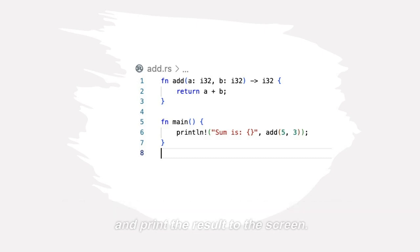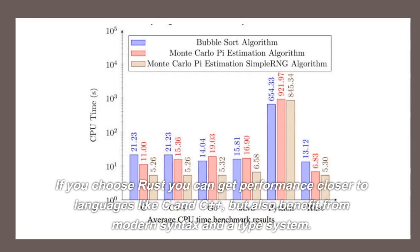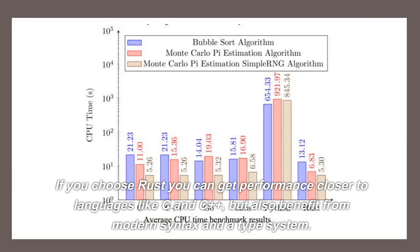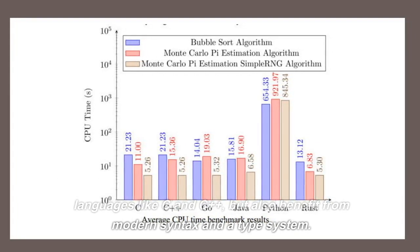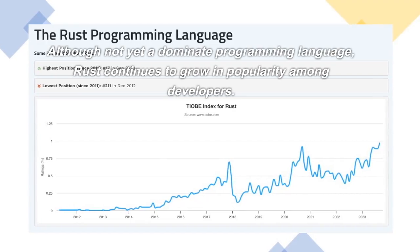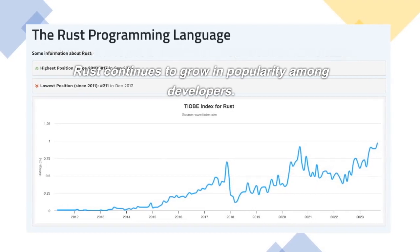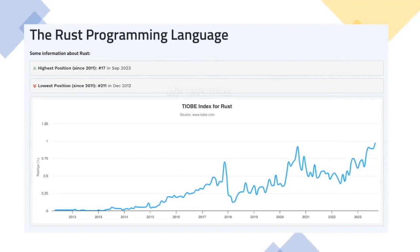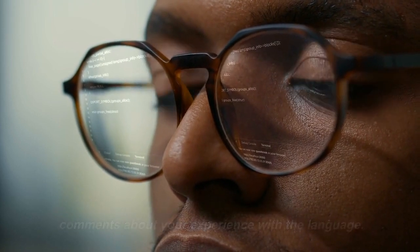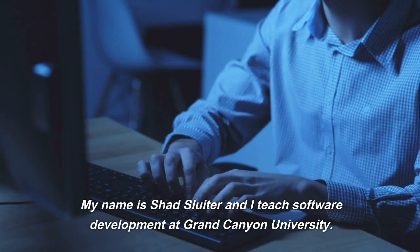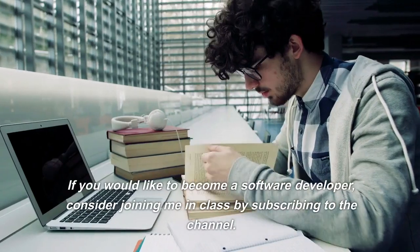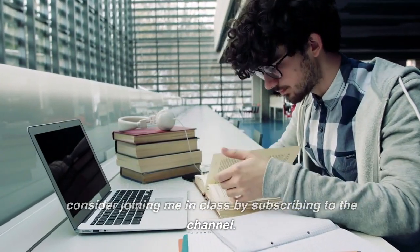If you choose Rust, you can get performance closer to languages like C and C++, but also benefit from modern syntax and a type system. Although not yet a dominant programming language, Rust continues to grow in popularity among developers. Are you a fan of Rust? Tell the rest of us in the comments about your experience with the language. My name is Shad Sluder, and I teach software development at Grand Canyon University. If you would like to become a software developer, consider joining me in class by subscribing to the channel.